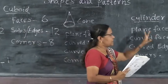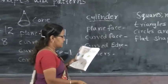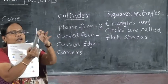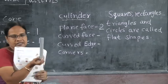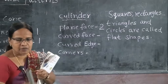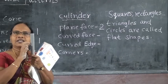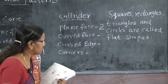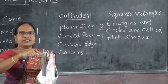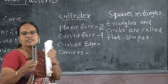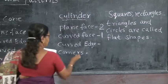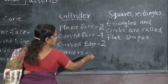Next, cylinder. How many plane faces? Cylinder has two plane faces — one and two. Then how many curved faces? One curved face. Curved edges: two. And corners: zero.